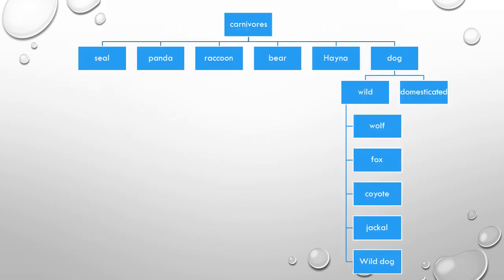This is the family tree of dogs that you need to fill. Family tree of dogs: Carnivorous means flesh-eating or meat-eating animals. These are six in number: seal, panda, raccoon, bear, hyena, dog. These are of two types — wild and domesticated. Domesticated dogs are those kept at home or tamed animals. Wild dogs are of five types: wolf, fox, coyote, jackal and wild dog itself.